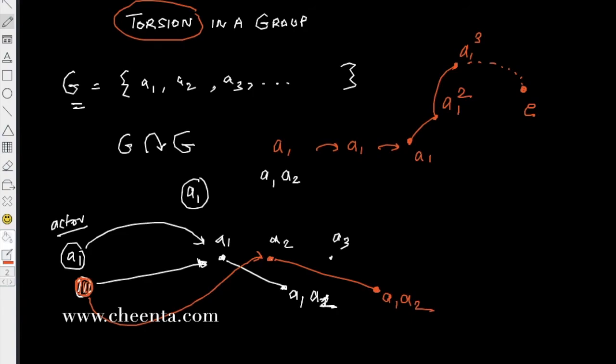If the group has torsion, if a1 to the power sum n is identity, only then a group is said to have torsion. If there are elements in the group which when raised to some power goes to identity.